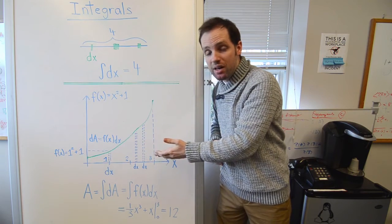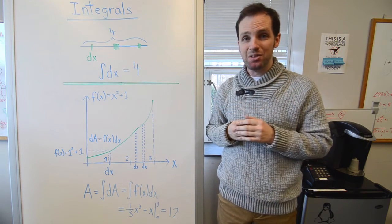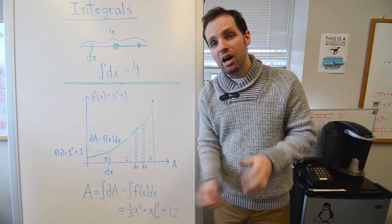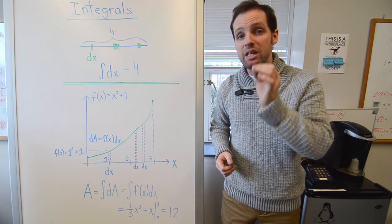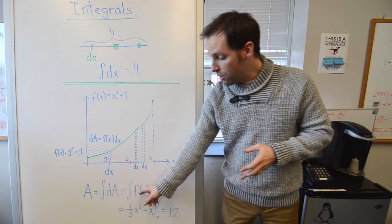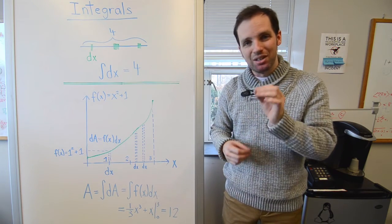Now, I can break the rest of the area under the curve into an infinite number of little rectangles, therefore making the total area, A, under the curve equal to the integral, or sum, of all the little dAs, or the sum of the function times the little widths.